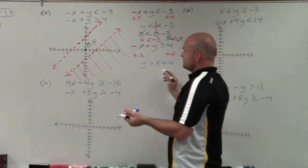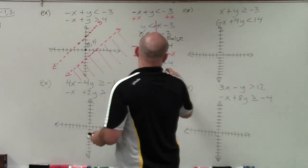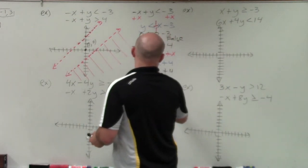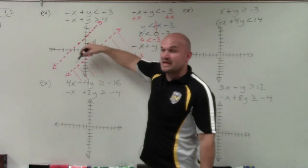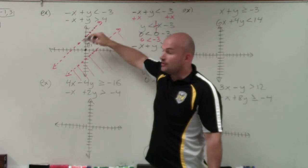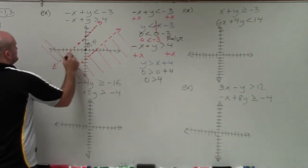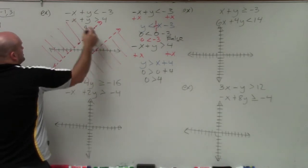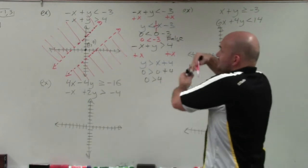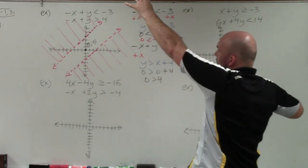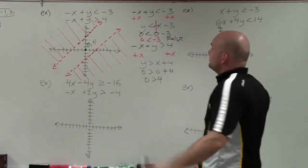For the next equation, I plug in (0, 0): 0 is greater than 4, which is again false. So all points below this line are false, and all points above it are true, so shade above. The two lines don't intersect, and their true regions go in opposite directions, so there's no feasible region where they intersect.